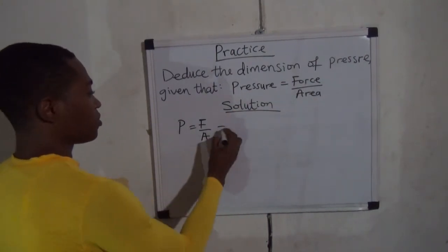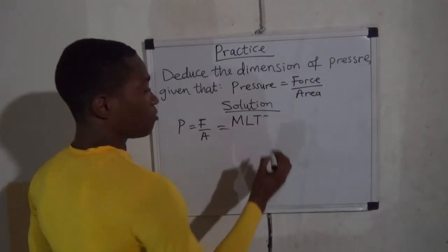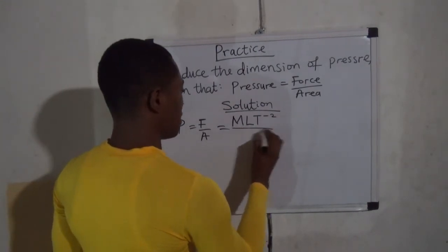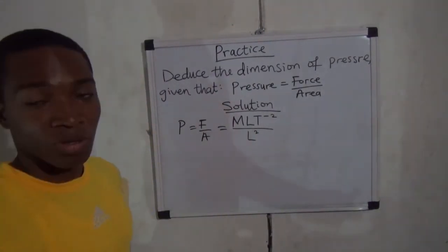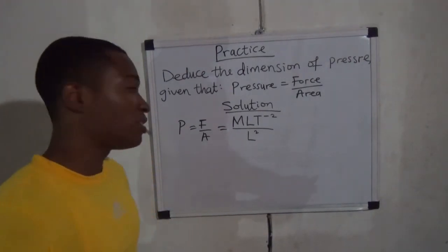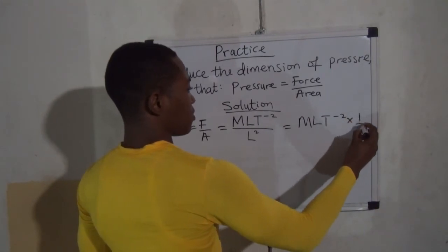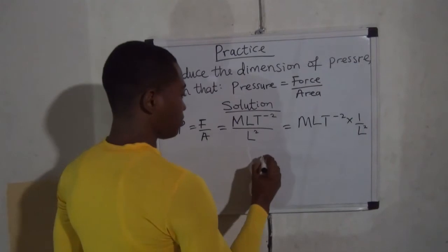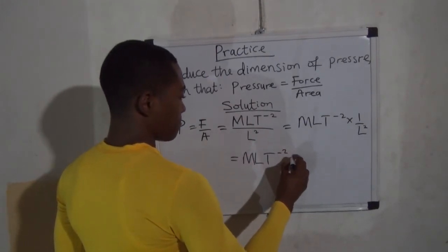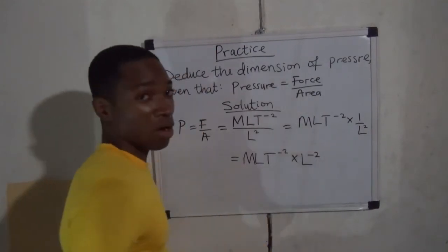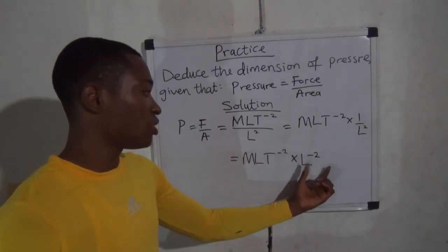Pressure is force divided by area. The dimension of force is MLT to the power of minus two, divided by the dimension of area, which is L squared. Dividing by L squared is equivalent to multiplying by one over L squared, which by the law of indices equals L to the power of minus two. So we have MLT to the power of minus two multiplied by L to the power of minus two.